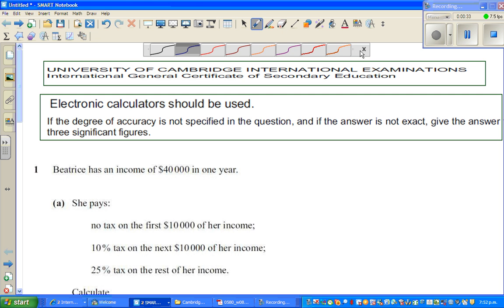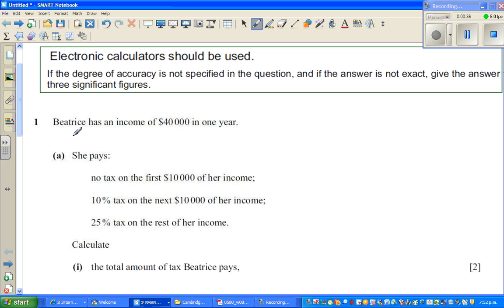So let's read the question. Beatrice has an income of $40,000 in one year. She pays no tax on the first $10,000 of her income. Then she pays 10% tax on the next $10,000 and 25% on the rest of her income. So the first $10,000 she pays no tax, it's tax-free. So if $10,000 is non-taxable, the taxable income is $30,000.